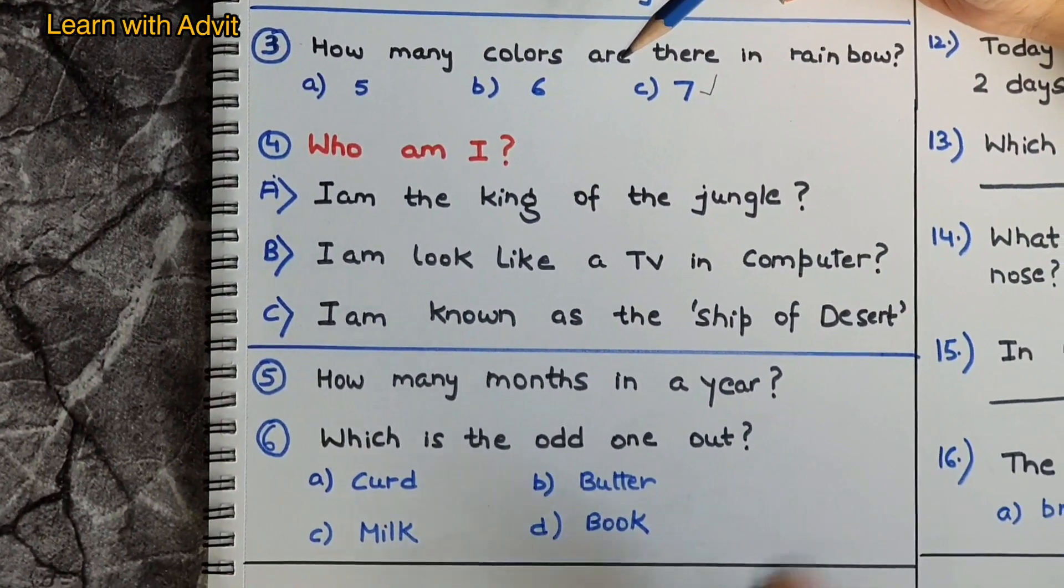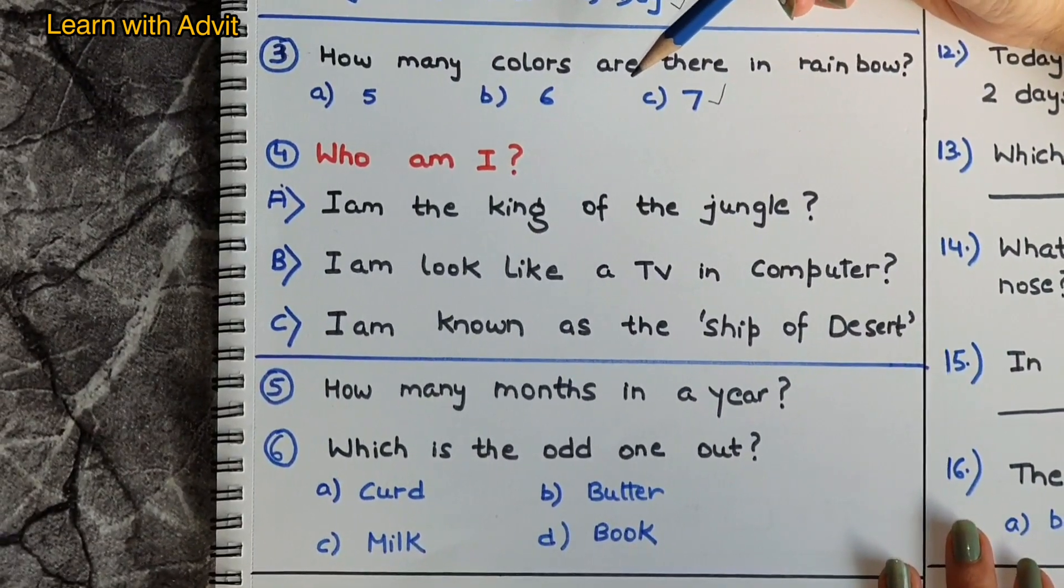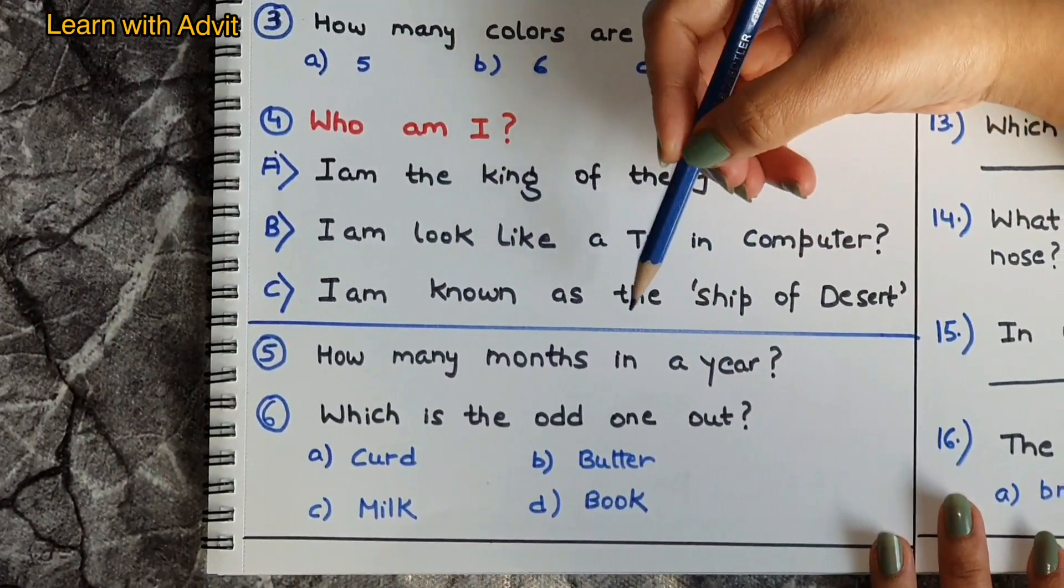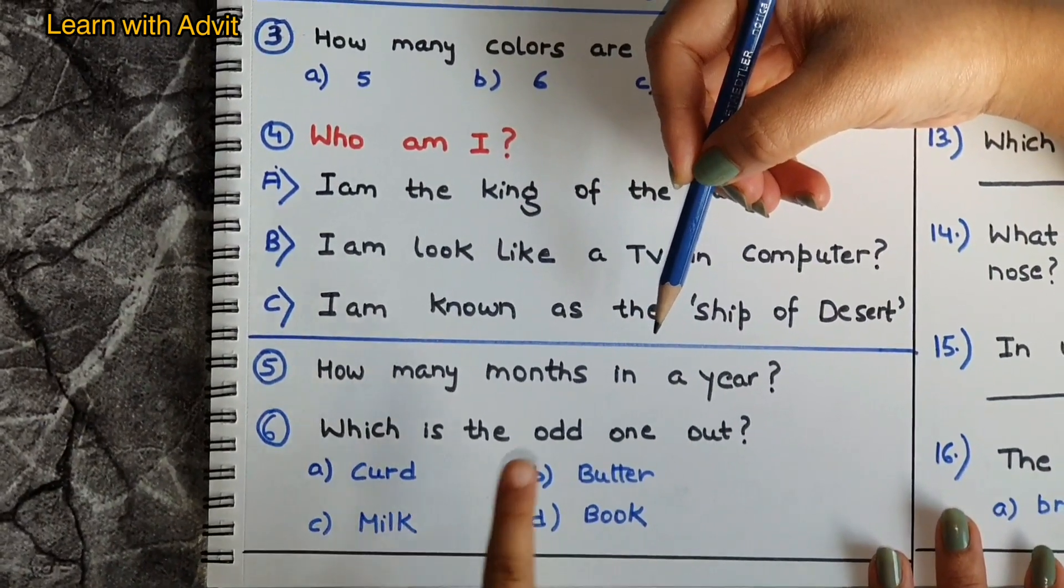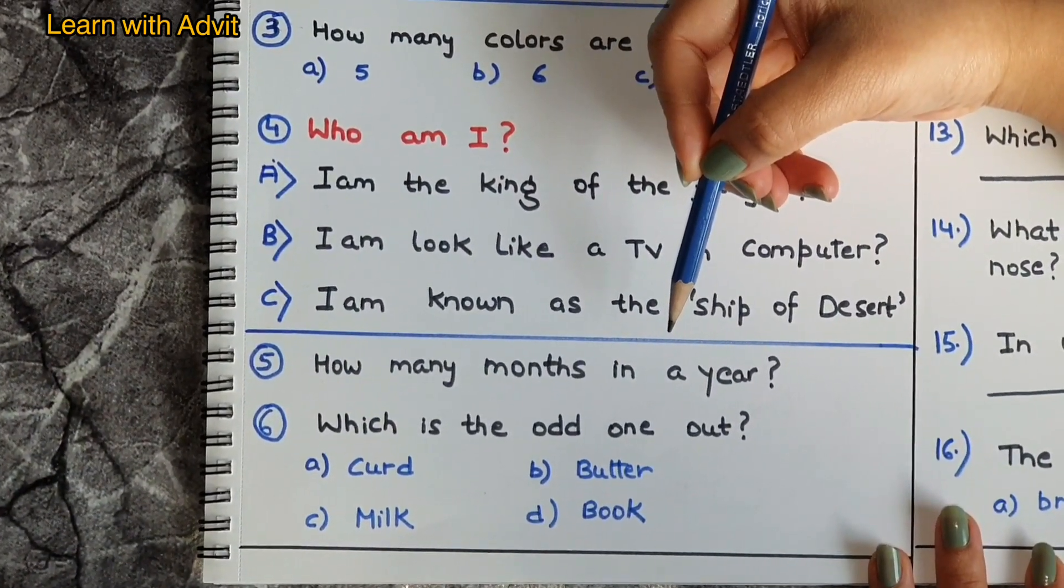I am known as ship of desert. Which animal is known as ship of desert? Camel, yeah camel. How many months in a year? It is 12 months, very good.